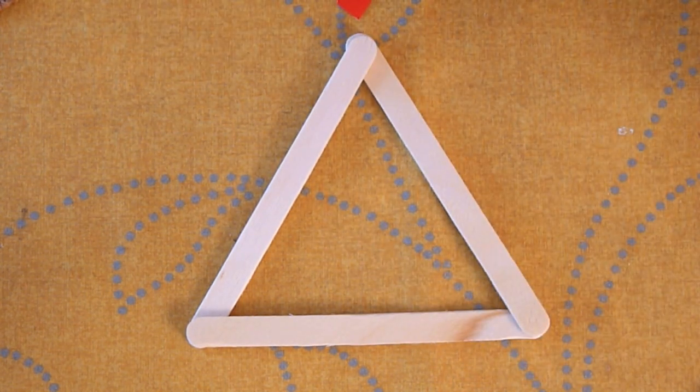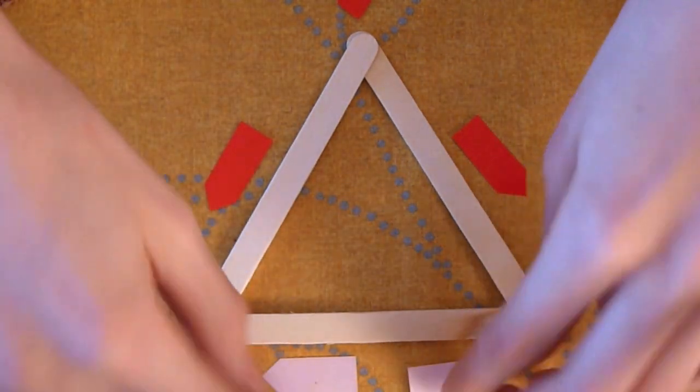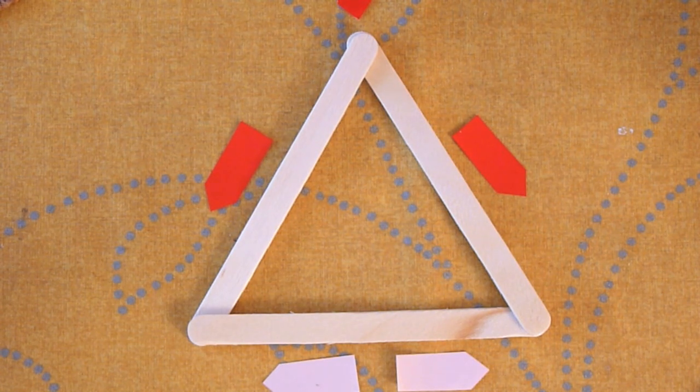Now the red arrow that has just been put at the top shows the first pressure on the triangle, the compression. The two on the sides also show compression and the two at the bottom tension.